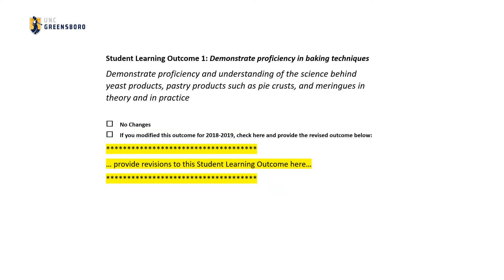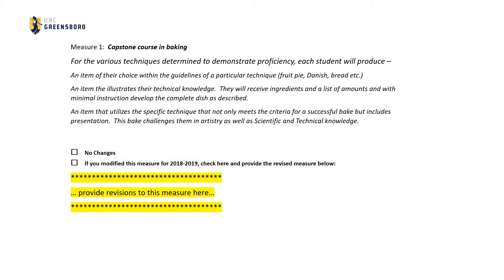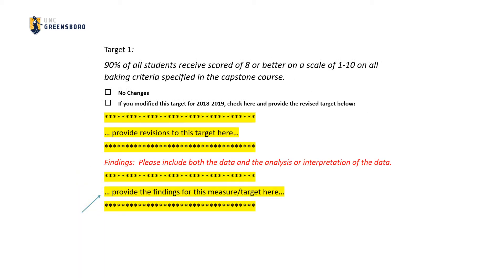The student learning outcome section is next. In this section, all the student learning outcomes for the program are listed. Each outcome is followed by the associated measure and target used to illustrate the program's results in achieving the outcome. The focus of this section is the findings section, where in the editable area containing the words "provide the findings for this measure/target here," the user will report the findings related to the measure and target. The user should include data and analysis or interpretation of the data that support the finding.